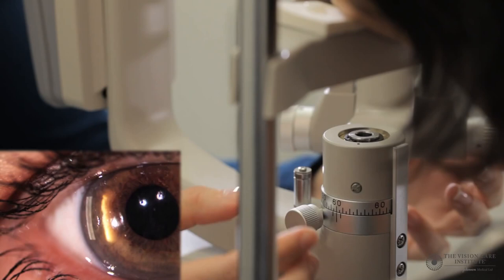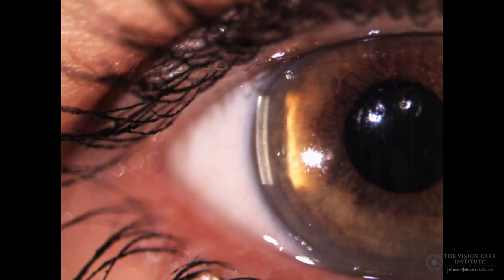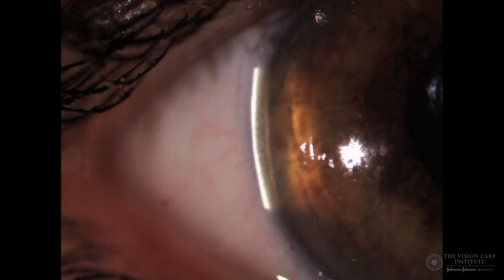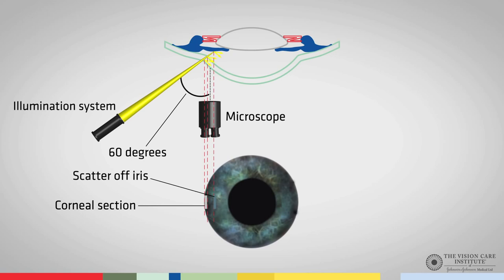It is important to have the section on the very edge of the cornea, and then we can increase the magnification further. Here, we have both the corneal section and the scattered light off the iris parallel to each other. This is achieved because we reduced the slit height and will make the assessment more accurate. The illumination system is directed at an angle of 60 degrees, forming a corneal section. The light, after passing through the clear aqueous, strikes and scatters off the iris.